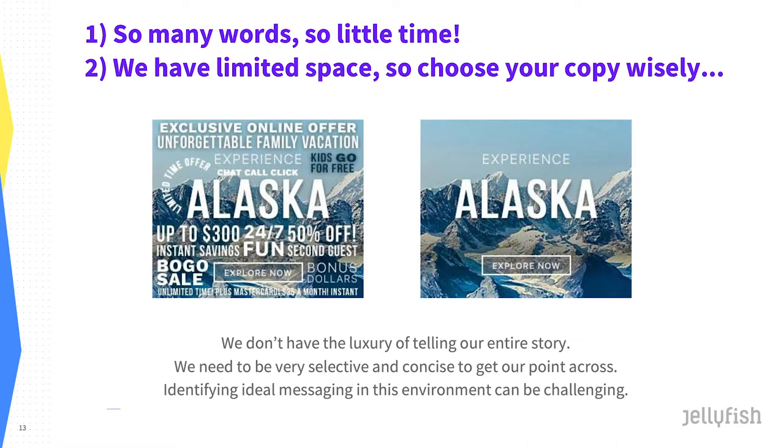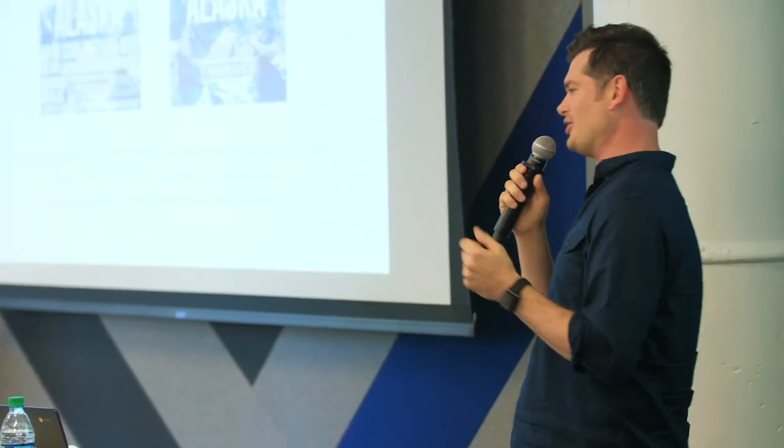There are two main components to almost any advertising format: text/copy and imagery. Think about all the words in the English language and all the different combinations we can use to write headlines, sub-headlines, and CTA copy. It would be almost impossible to manually tag all the headlines and CTAs we might want to test — we just don't have the time or resources. In the digital space, we have limited space and can't tell a long-winded story. We have to be very selective and concise. Identifying the perfect words to maximize performance — that's the challenge.